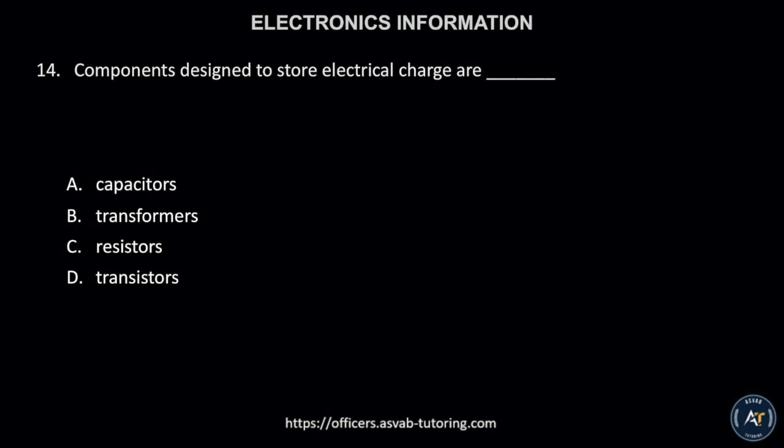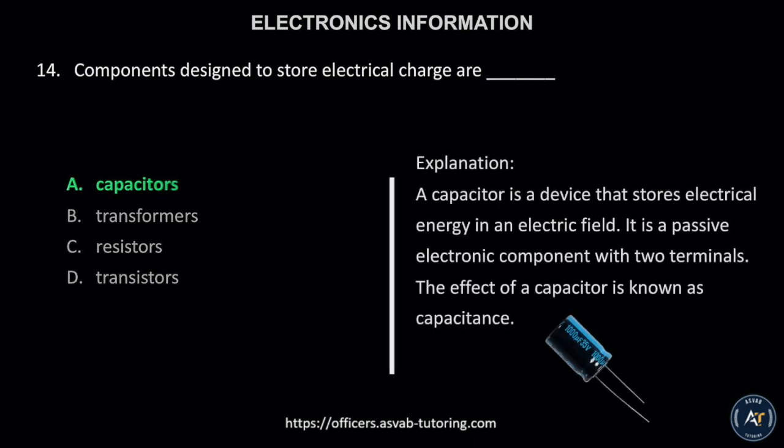Number 14. Components designed to store electrical charge are: A. Capacitors, B. Transformers, C. Resistors, or D. Transistors? The correct answer is letter A, capacitors. A capacitor is a device that stores electrical energy in an electric field. It is a passive electronic component with two terminals. The effect of a capacitor is known as capacitance.